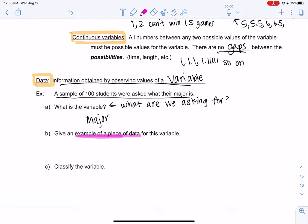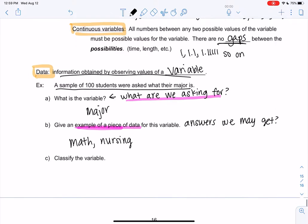What's an example of a piece of data? So a piece of data is what are we asking, but what are some answers we might get? Since I'm a math teacher, I'll say math. That was my major. We usually have a lot of nursing students in statistics, so maybe nursing. There's so many majors - English, engineering, these are all examples. There's no one answer, but those are some examples. You're welcome to come up with your own.